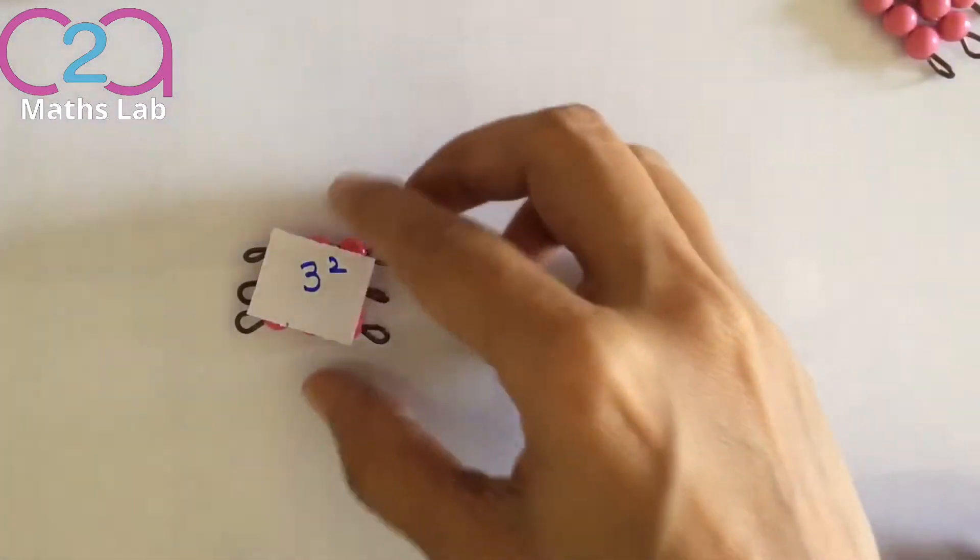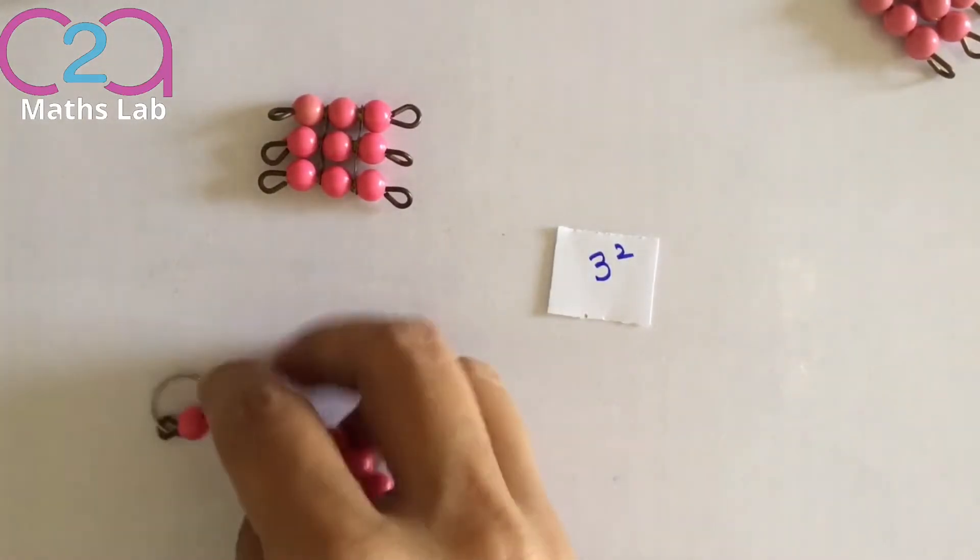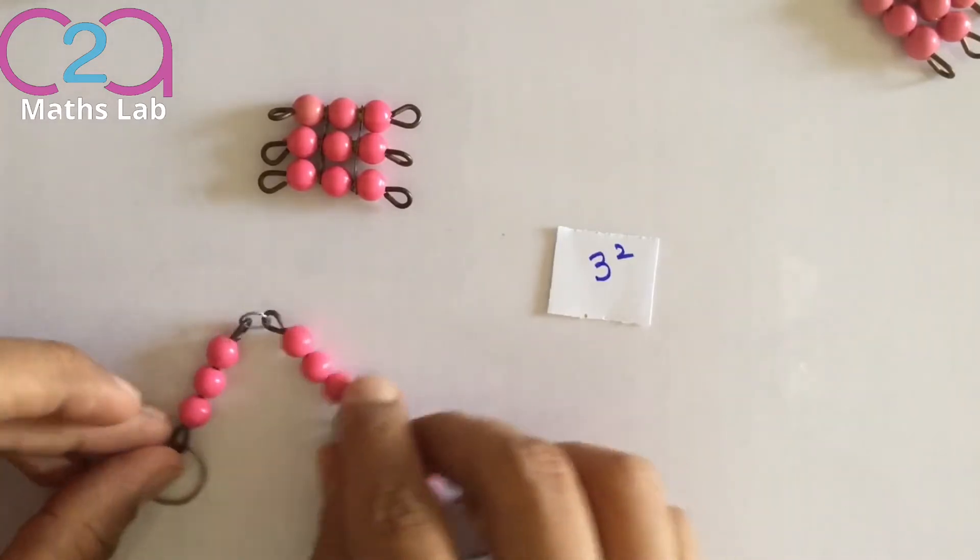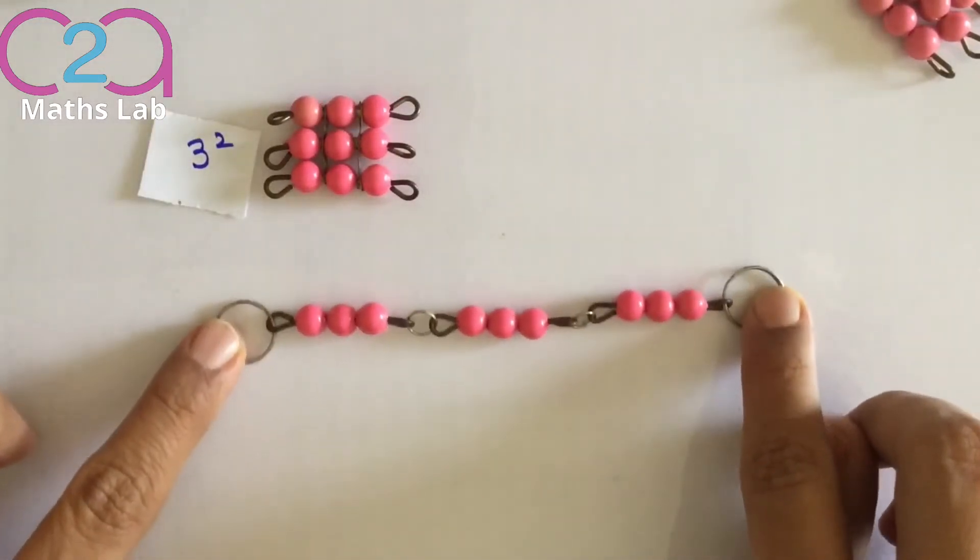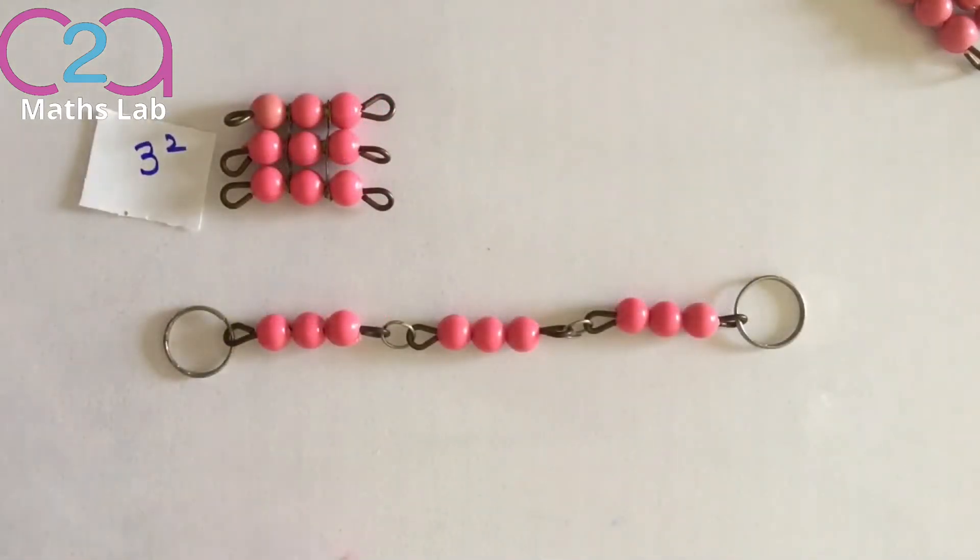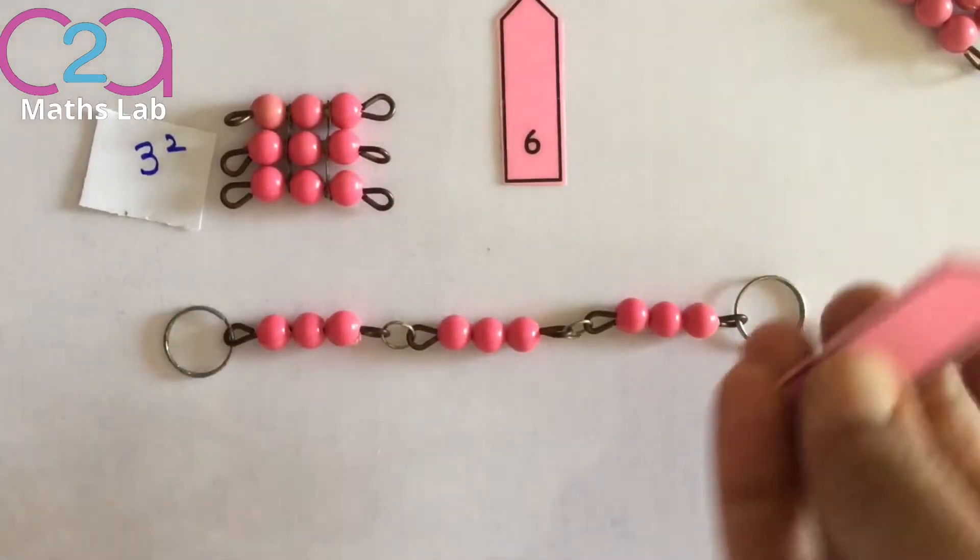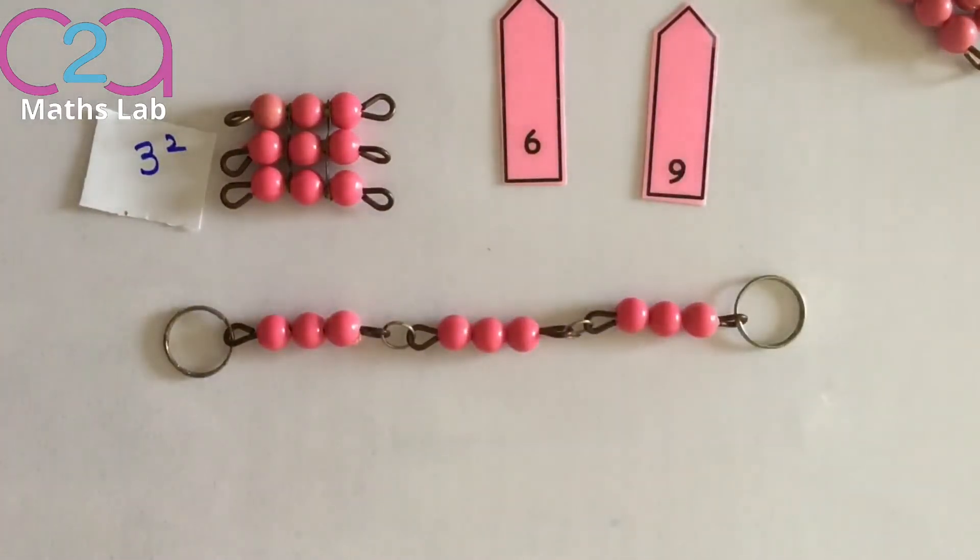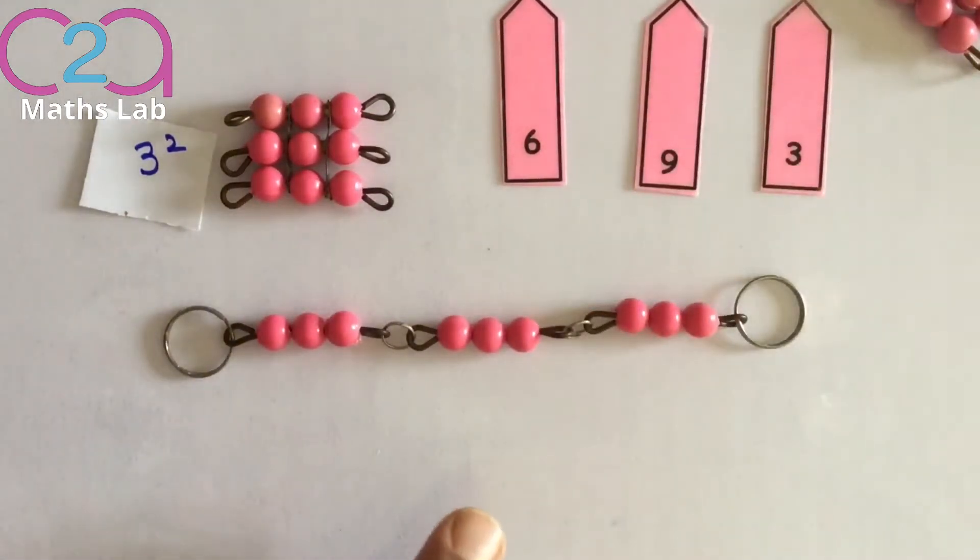Now let's open this square. Let's count all the beads in this square. So this is a square. Let's open this. Now we have these numbers: 6, 9, and 3. So now we will count and place the number according to the bead.